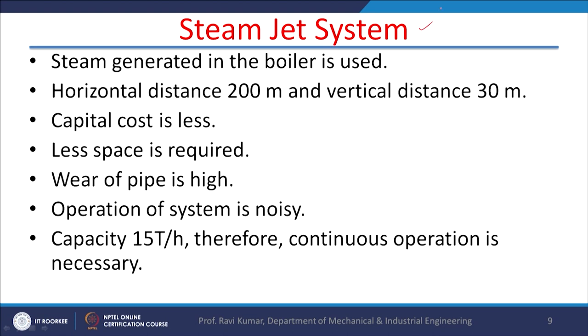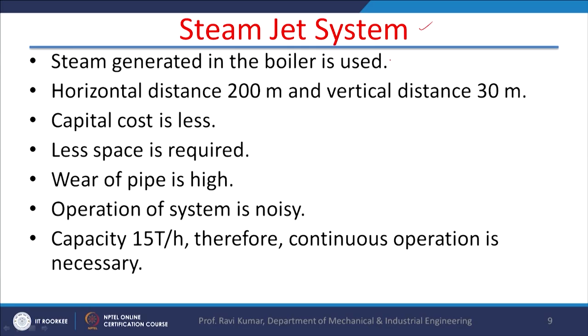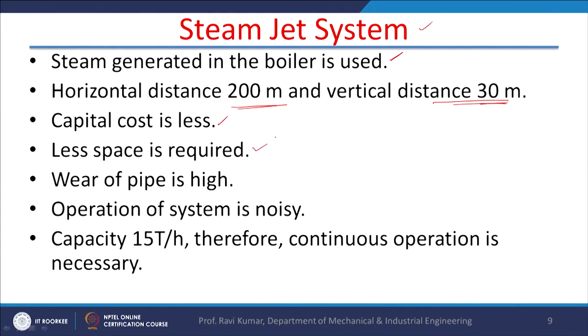The last system is the steam jet system. In it, steam has to be produced — usually a separate steam generation system is used, kept at a horizontal distance of around 200 meters and a vertical distance of about 30 meters. Because steam has very high enthalpy, less steam is required, so capital cost is less and less space is required. However, wearing of the pipe is also high, as in the case of pneumatic systems.